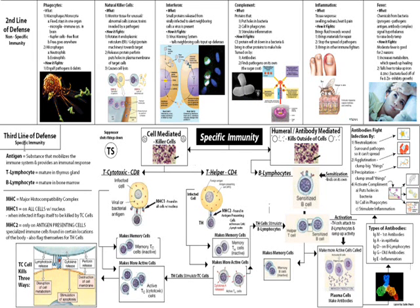Next, we're going to talk about specific immunity, or the third line of defense. Let's go over here and talk about what an antigen is. An antigen is anything that mobilizes the immune system and provides an immune response.